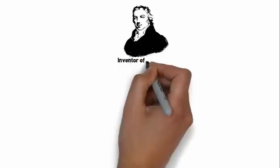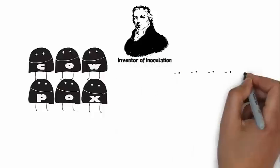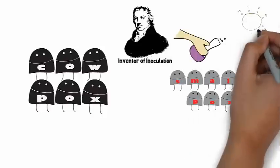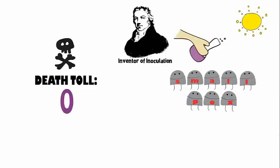Edward Jenner is the inventor of inoculation. He discovered that people who had cowpox didn't get smallpox. So what he did was he gave everybody a little dose of cowpox one summer and the next time the smallpox plagues came around, nobody died of smallpox.